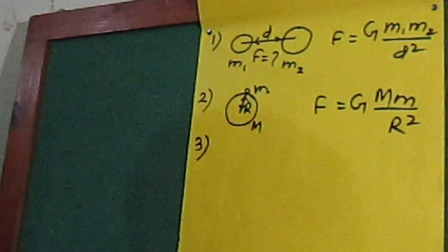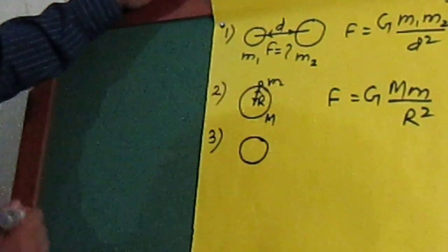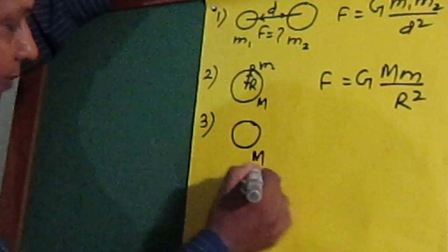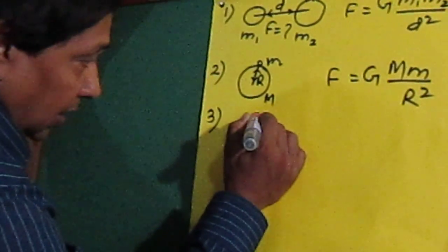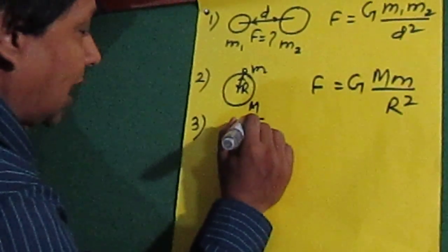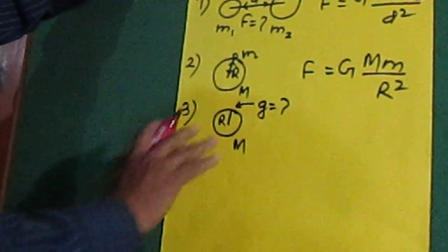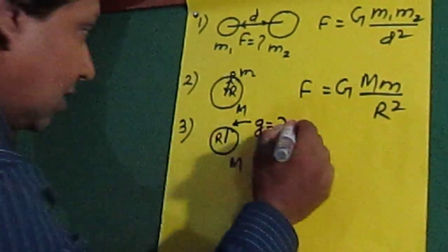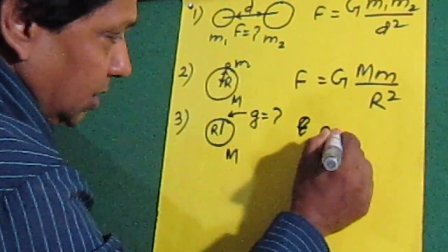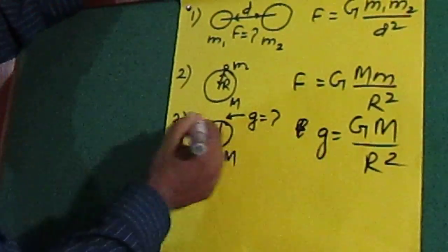Now the third equation. Let's say we have a heavenly body and we want to calculate the acceleration due to gravity on its surface. The mass of this big heavenly body is capital M, and its radius is R. The acceleration due to gravity on its surface is calculated using: g equals capital G times capital M divided by R squared.